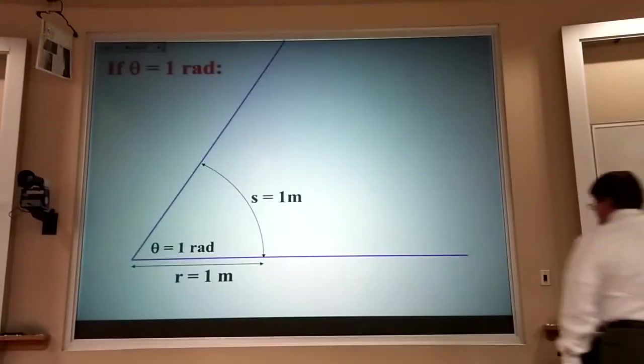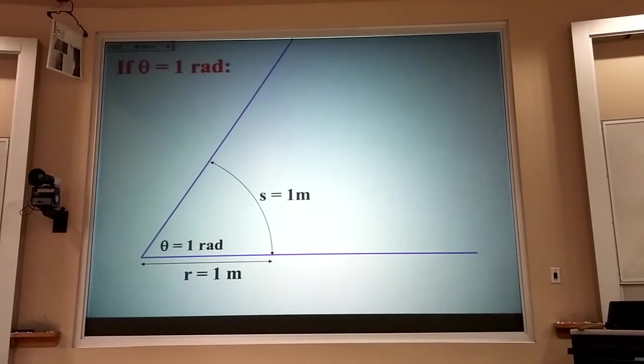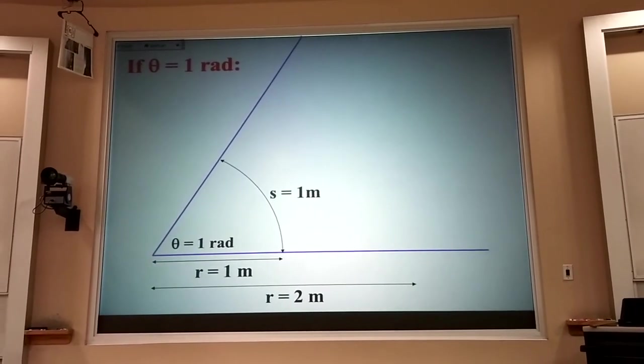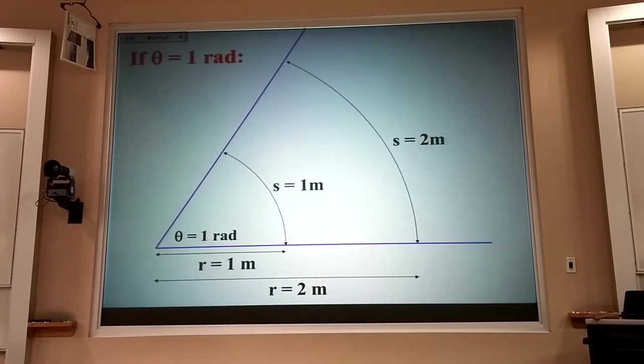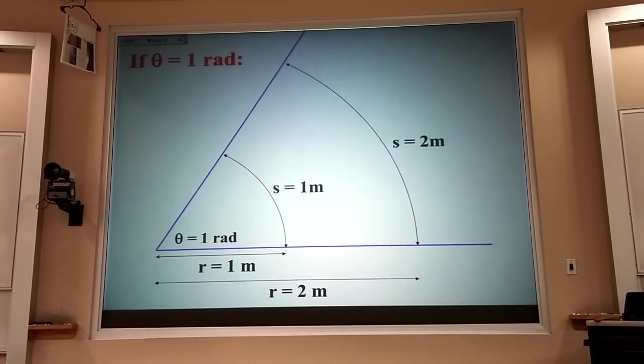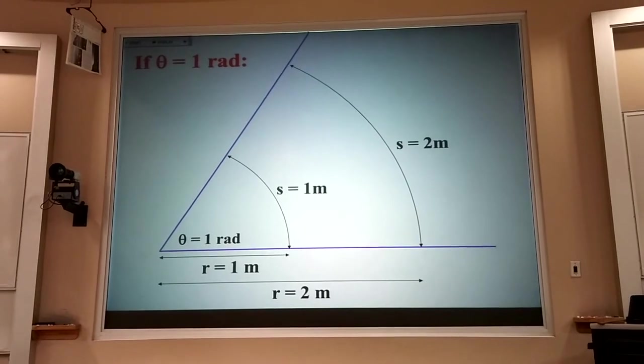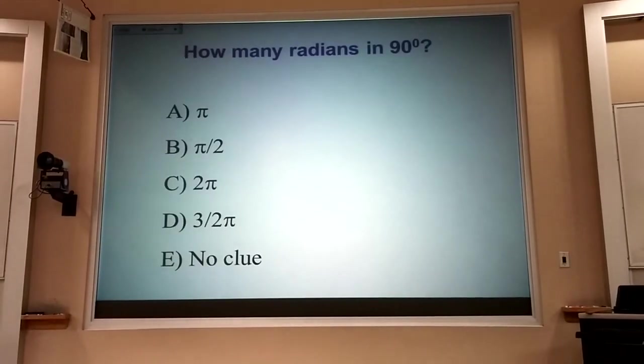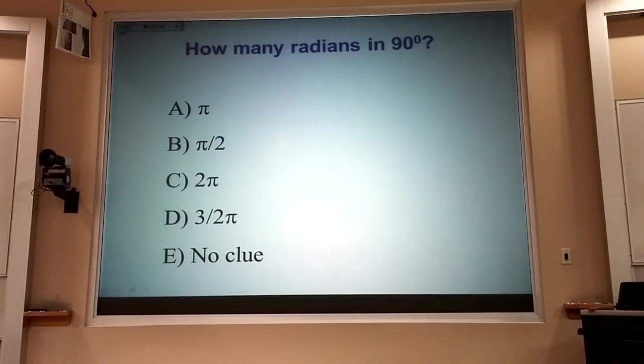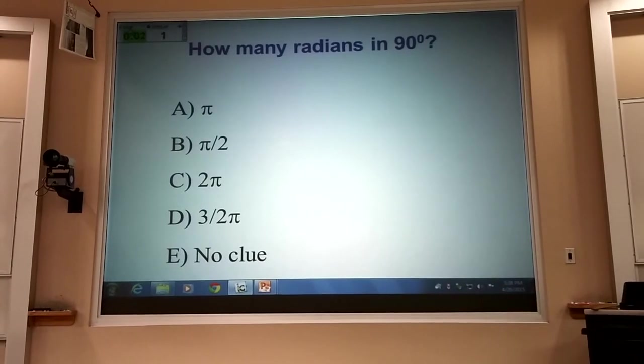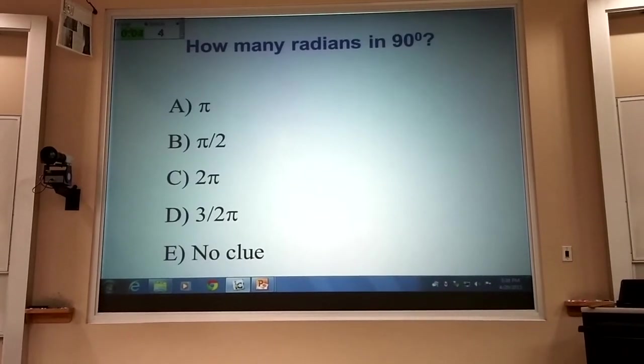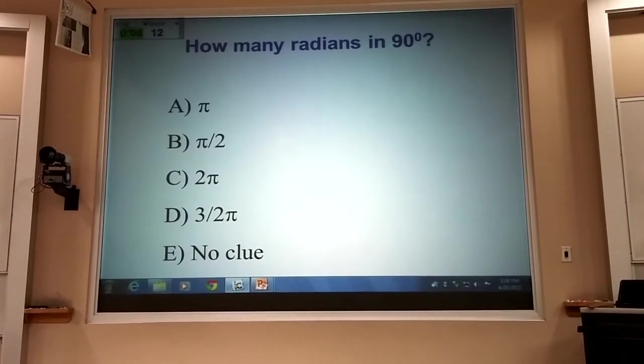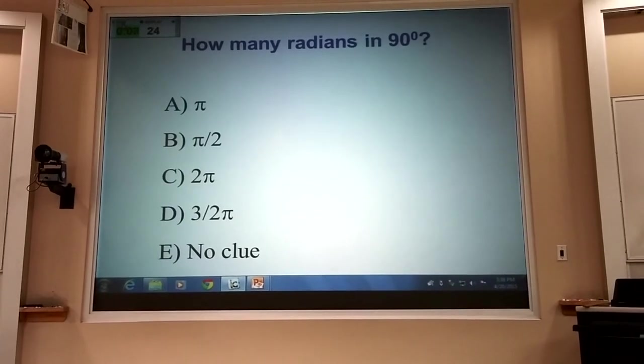Okay, now, I didn't have to use a one meter stick. I could have come out two meters and used a two meter stick. Either way, I'd have one radian there. Now, really quick, with your clicker, how many radians are in 90 degrees? That's not hard. I think all of you are going to get this right. Just checking.